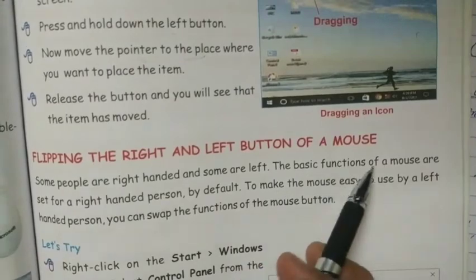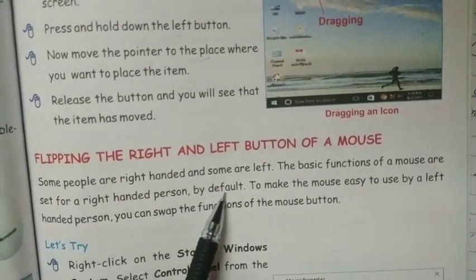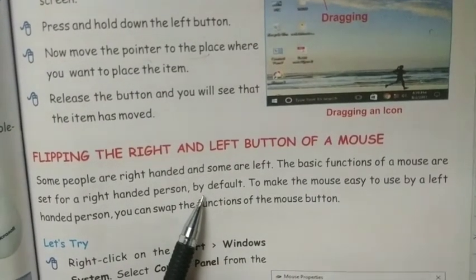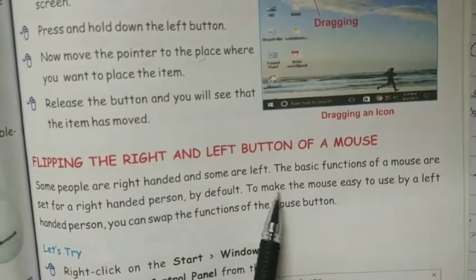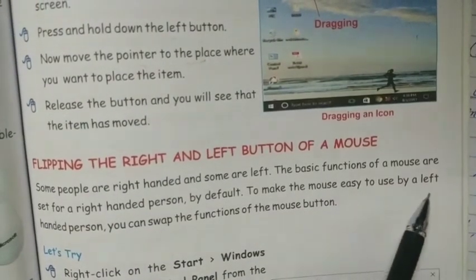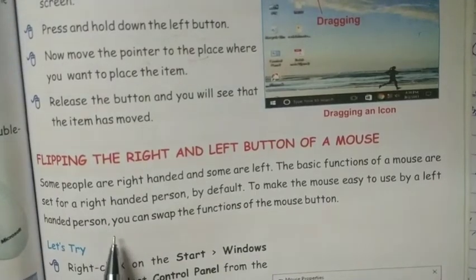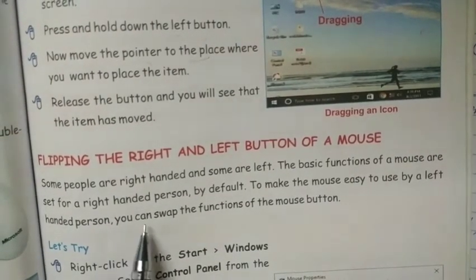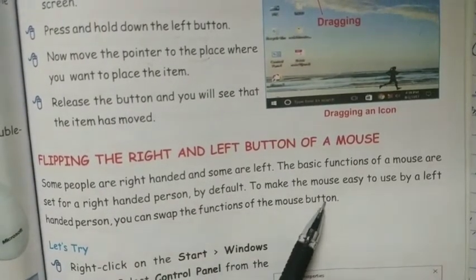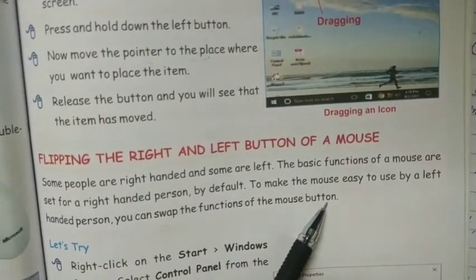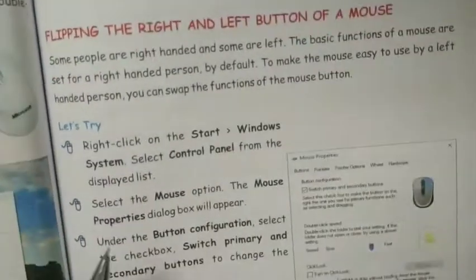The basic function of a mouse are set for a right handed person by default. By default the mouse function is set for right handed persons. To make the mouse easy to use by a left handed person, you can swap the function of a mouse button. You have to swap or change the mouse button's functions.